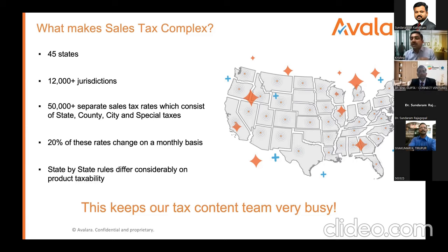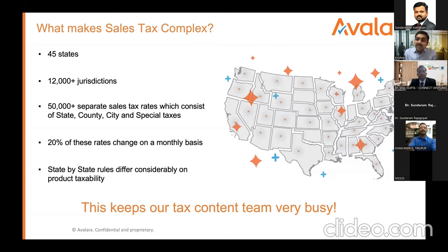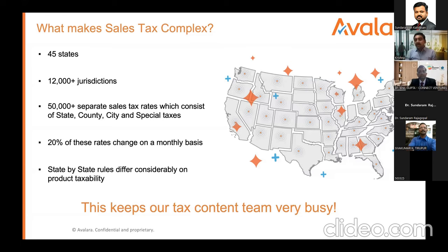The remaining 45 states each have their own threshold. If you are selling into any of these states, you need to keep a tab on it. Also, taxes are not just at the state level — they are at the jurisdiction level. There are around 12,000 to 15,000 jurisdictions in the United States. You have around 50,000+ sales tax rates across 12,000+ jurisdictions and 45 states. The complexity is immense, and it is not easy to keep track of all these rates for every product.